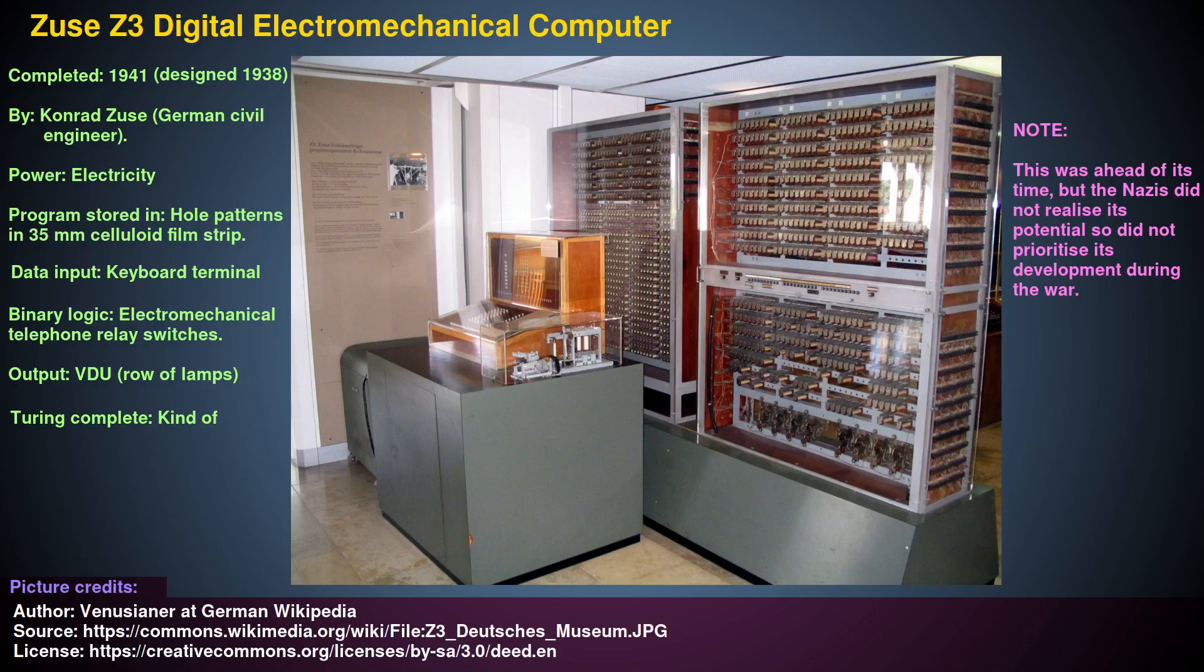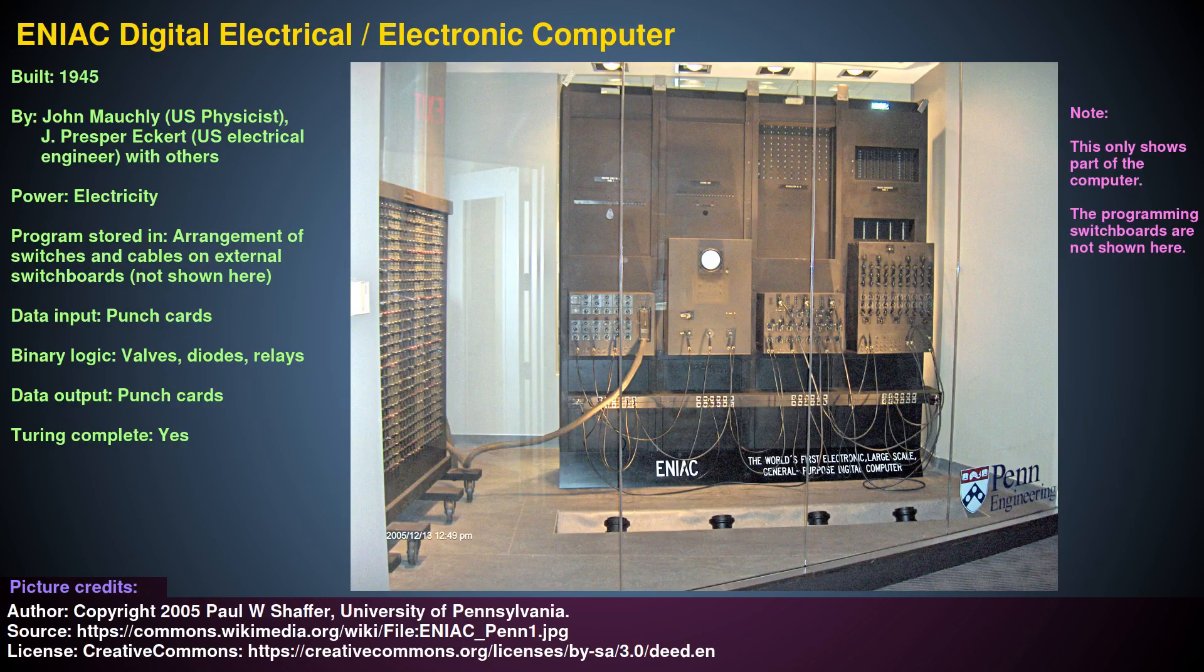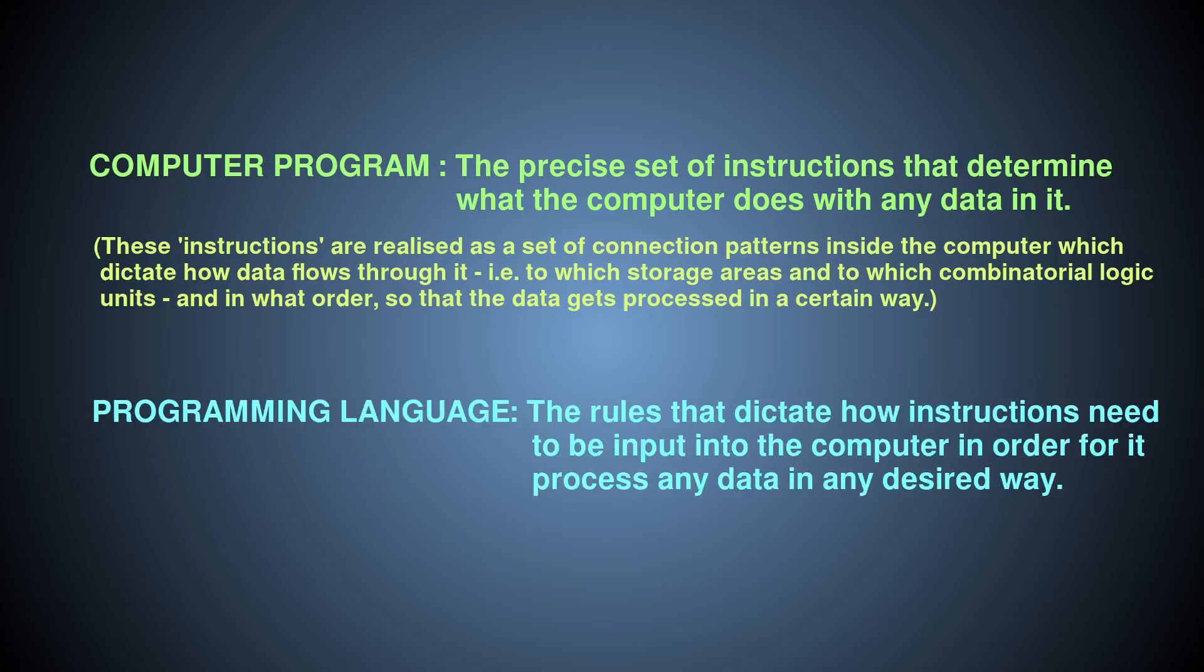These were powered by electricity and had the ability to do a variety of different calculations on the data put into them by being fed precise instructions. Any particular set of those instructions that gets the machine to do a particular job is called a computer program. There are specific rules that must be obeyed which dictate the specifics of how such instructions must be expressed in order for them to be put into effect by the computer, and those rules are called the programming language.